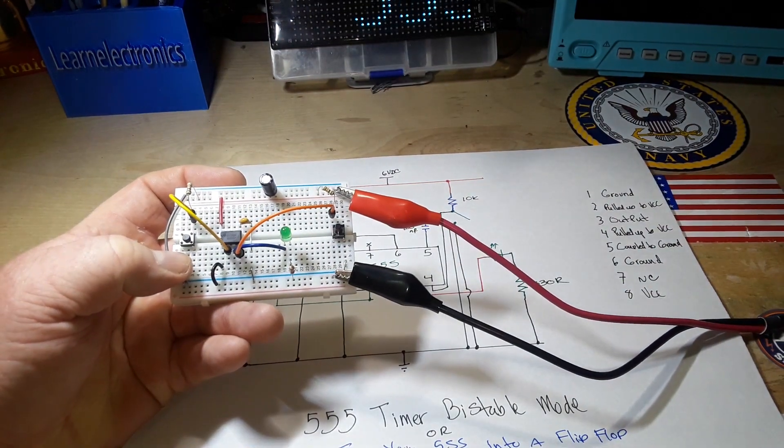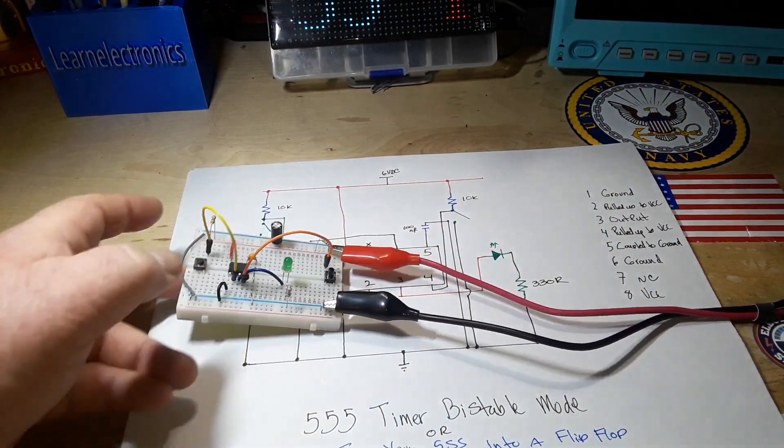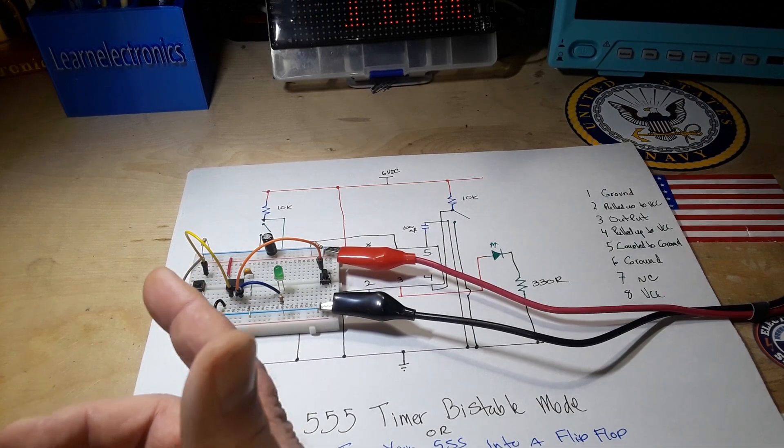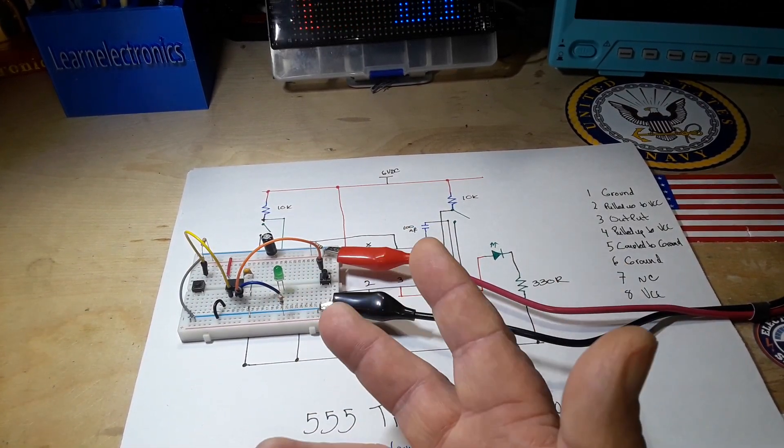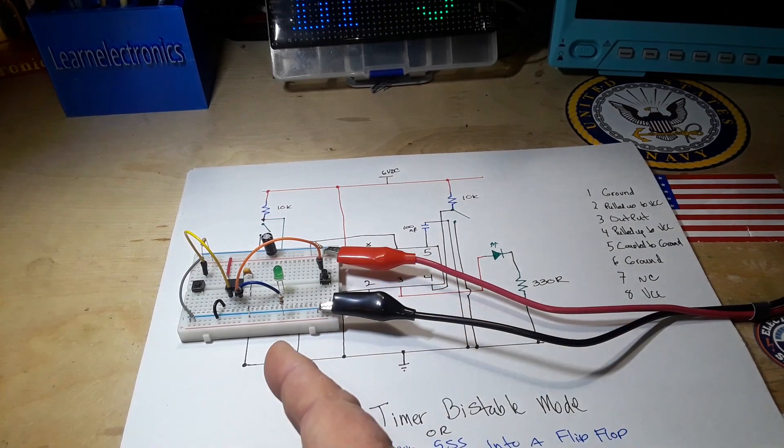Those are our two states, and that is how it becomes basically a flip-flop. A flip-flop circuit is a circuit that alternates between two states. In this case we're simply alternating the current going through the output pin.